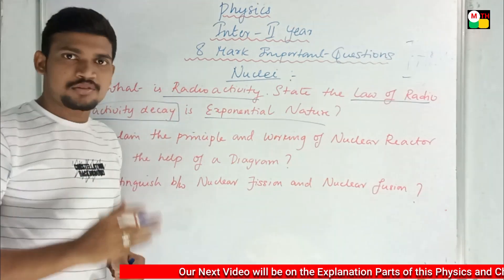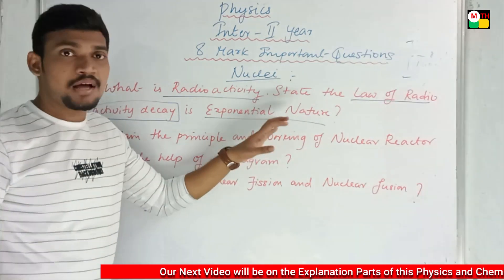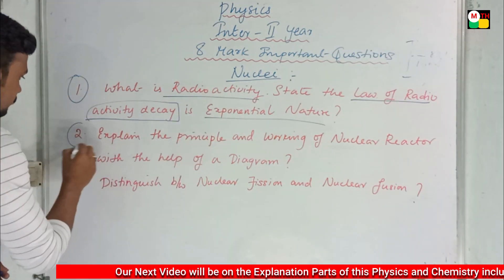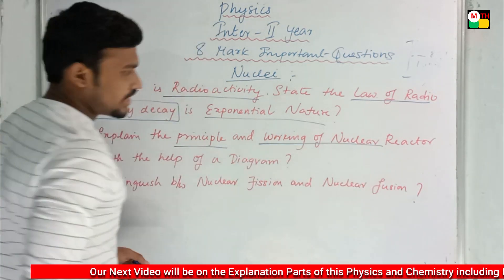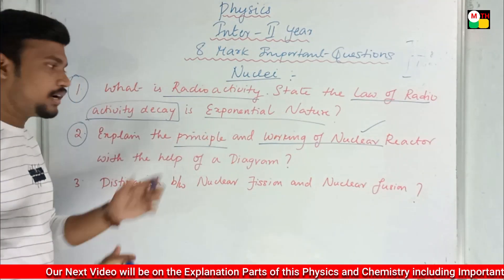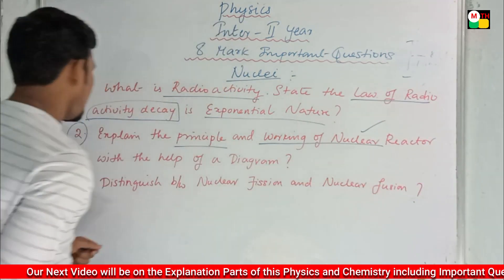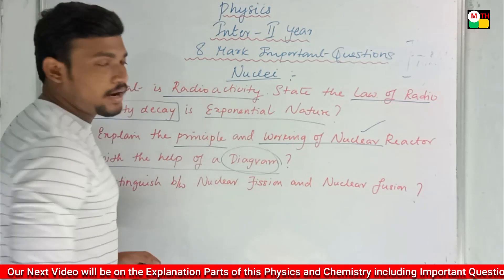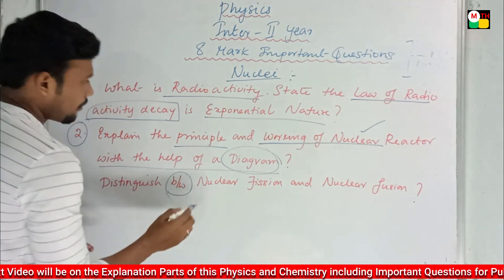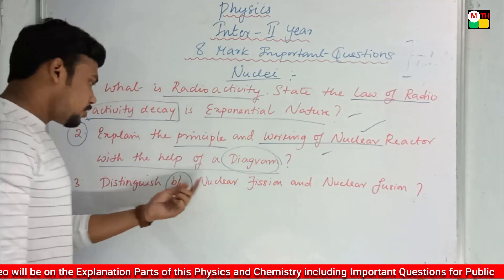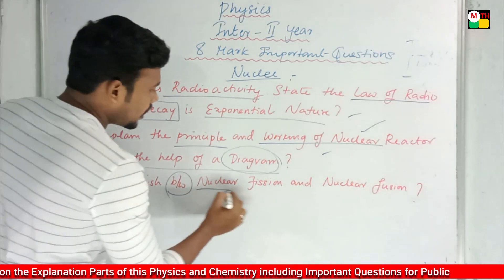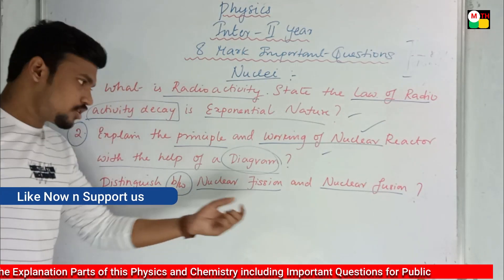Theory from three chapters: Current Electricity, Waves, and Nuclear Physics — all three chapters are theory-based with some mathematical components. The next question: explain the principle and working of a nuclear reactor. Also, distinguish between nuclear fission and nuclear fusion — this is also a very important question.